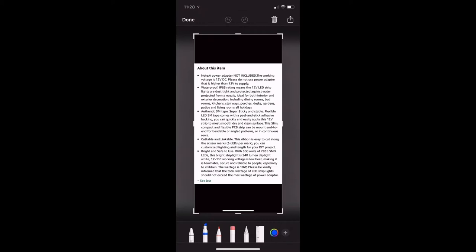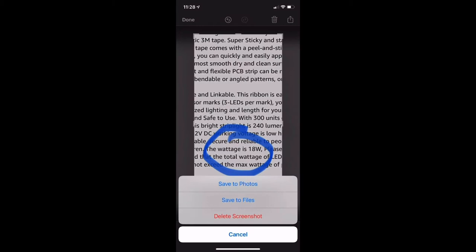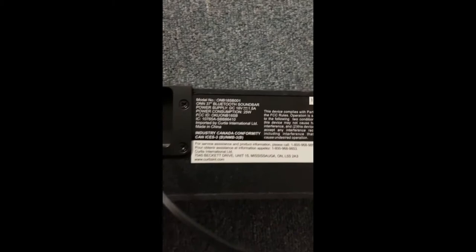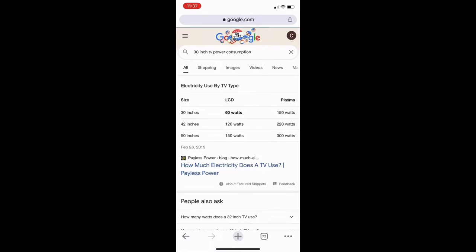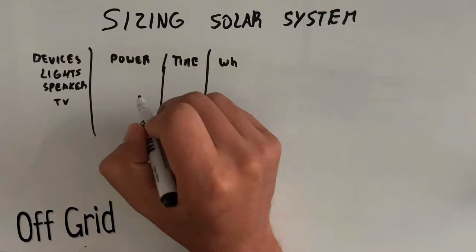To find the power for your device you can either look at the description, for example for my lights it says that it's about 18 watts, or you can also go behind of your device itself, there should be a power description for the speakers right here, I have 25 watts, or you can just google it, that's probably easier.